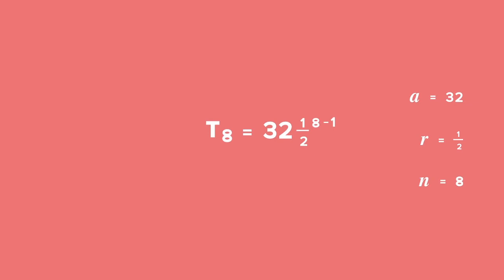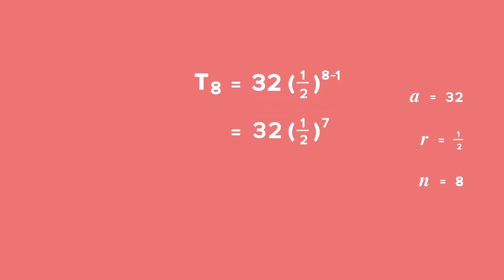T8 is equal to 32 times one half in brackets to the power of 8 minus 1, which is equal to 32 times one half to the power of 7, which equals 1 quarter. The 8th term has a value of 1 quarter.